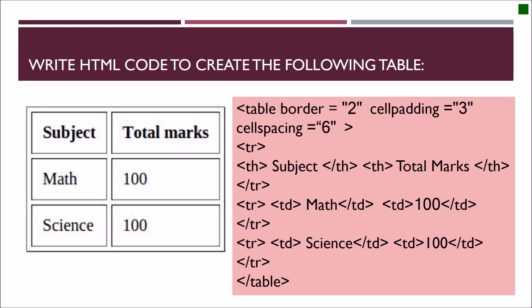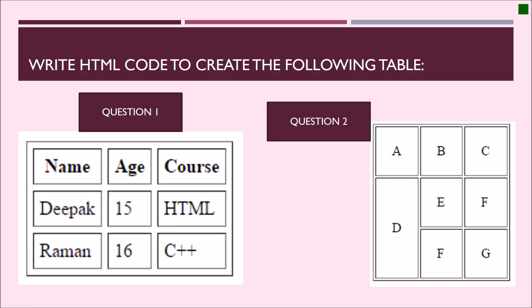Here one more example. To create this subject and total marks are heading. So we give here th tag. Three rows. So we are taking three trs and slash tr. Math 100, science 100 and we have given cell padding equal to 3 and cell spacing equal to 6. Although in the exam, if you have to create a table as a part of long answer, this spacing and padding is also given in the question. So you have to use those pixels which is given in the question itself. Otherwise, you can take for example as per your own assumptions.